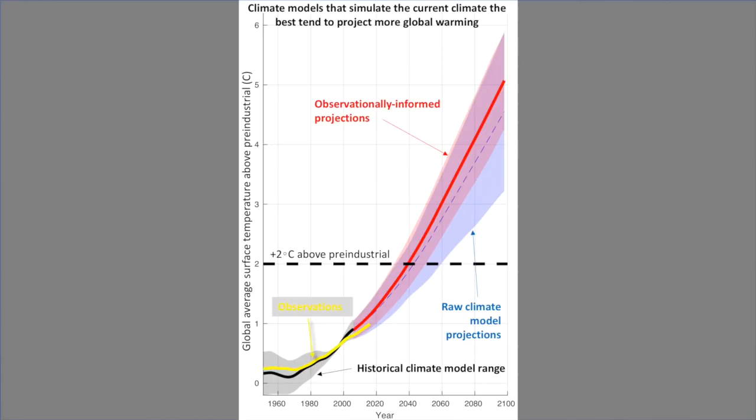Thus, it makes little sense to dismiss the most severe global warming projections because of model deficiencies. On the contrary, our results suggest that, if anything, model shortcomings can likely be used to dismiss the least severe projections.